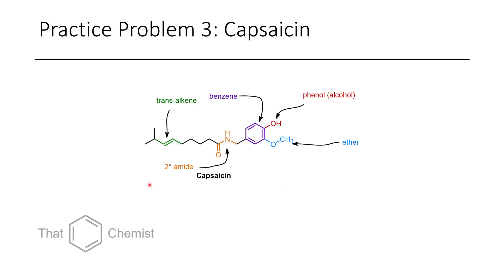In this example of capsaicin, you can see that we have an alkene — the two carbons are on opposite sides for this disubstituted alkene, so we call this a trans alkene. We also have an amine connected to a carbonyl, which is an amide. Because there's one additional carbon coming off of the nitrogen, it's a secondary amide. We have yet another benzene ring. We also have this alcohol, which when connected to a benzene ring we call a phenol, as well as this methyl ether. Just remember that there's a carbon on either side.